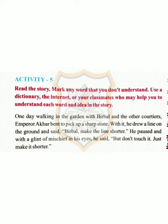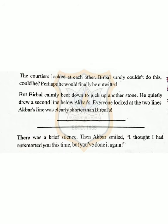Next is Activity 5. One day, walking in the garden with Birbal and the other courtiers, Emperor Akbar went to pick up a sharp stone. With it, he drew a line on the ground and said, 'Birbal, make this line shorter.' He paused and with a glint of mischief in his eyes he said, 'But don't touch it — just make it shorter.'